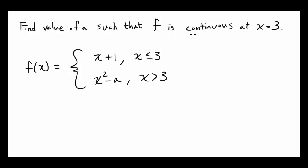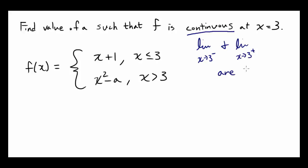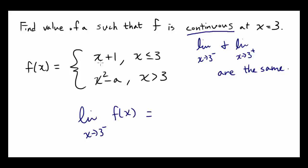How we can think about this is the function is continuous if the limit as x approaches 3 from the left and the limit as x approaches 3 from the right of the function are all the same. In this case, the limit as x approaches 3 from the left of f of x is going to be x plus 1, or 3 plus 1, or 4.